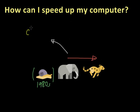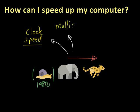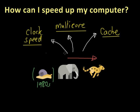We can either increase the clock speed of the processor — that's the first thing we can do. The second thing we can do is use a multi-core processor. The third thing is to use a processor with more cache memory. And the final thing is to use a graphics processing unit to take the processing load for some parts of the computation off the CPU. So we'll look at these one at a time.